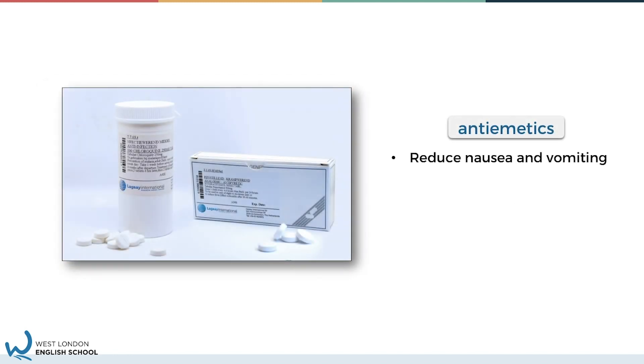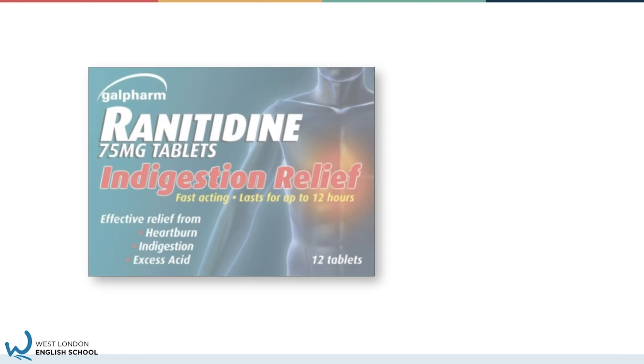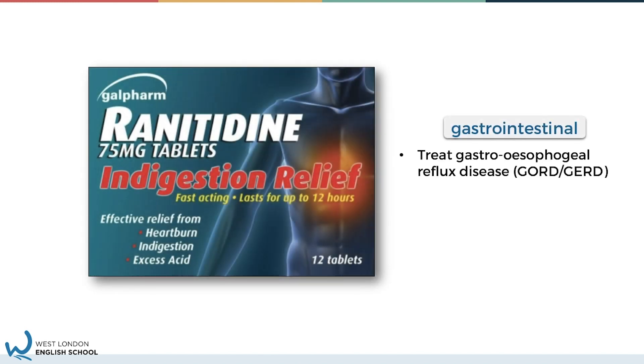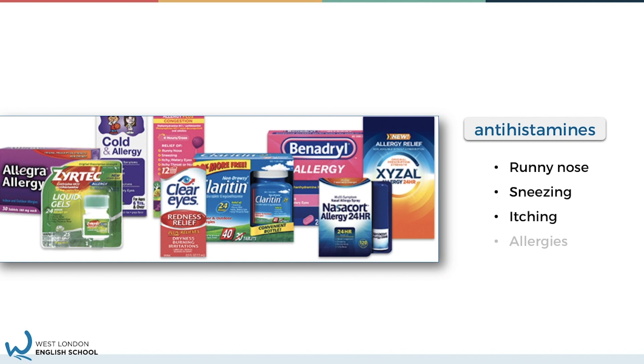Antiemetics are used for nausea and vomiting. Sedatives, again used for a range of different conditions. Gastrointestinal drugs are used for things such as indigestion or heartburn, maybe acid reflux. And then we've got antihistamines, again used for a range of different ailments, commonly used with allergies and things like hay fever as well.